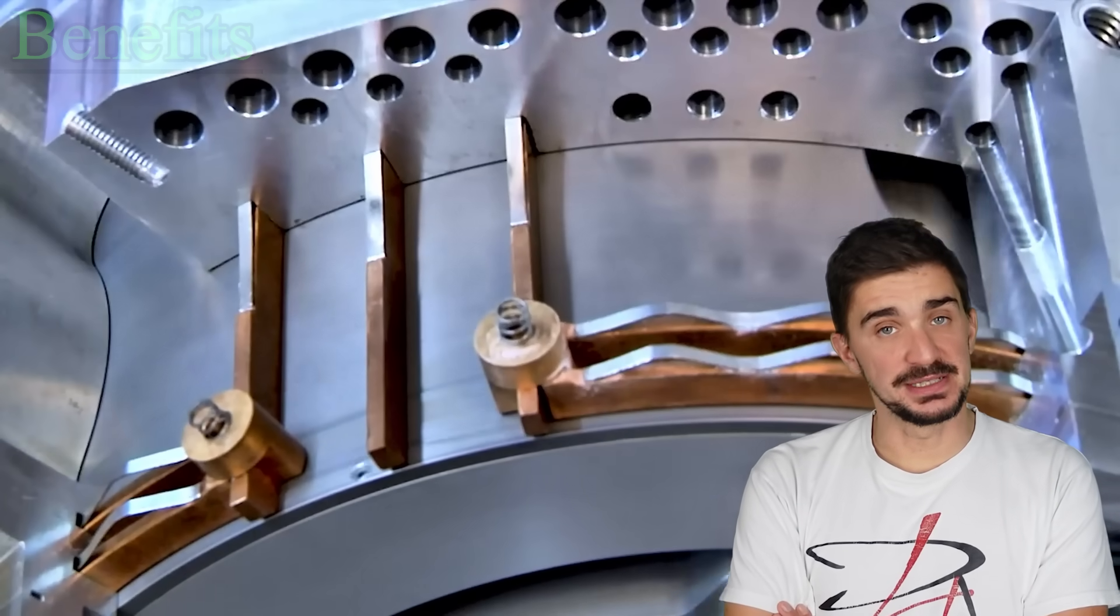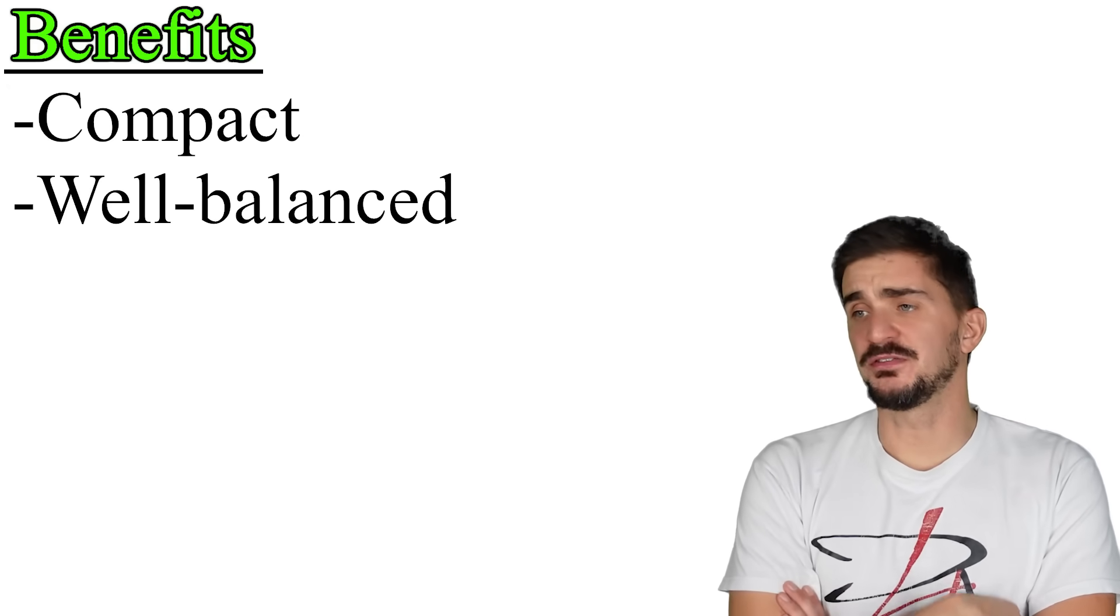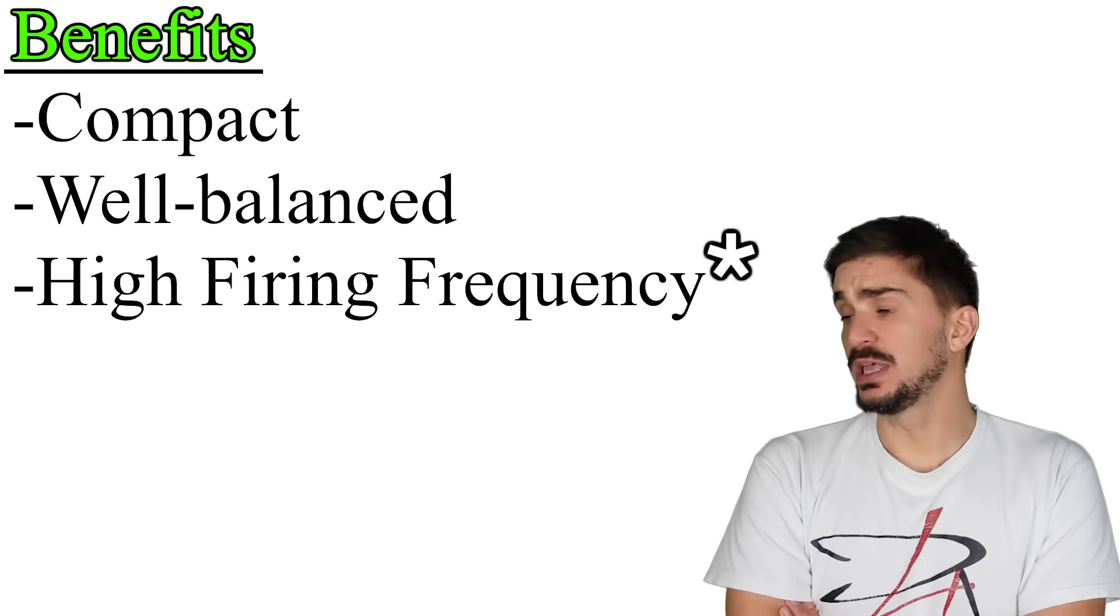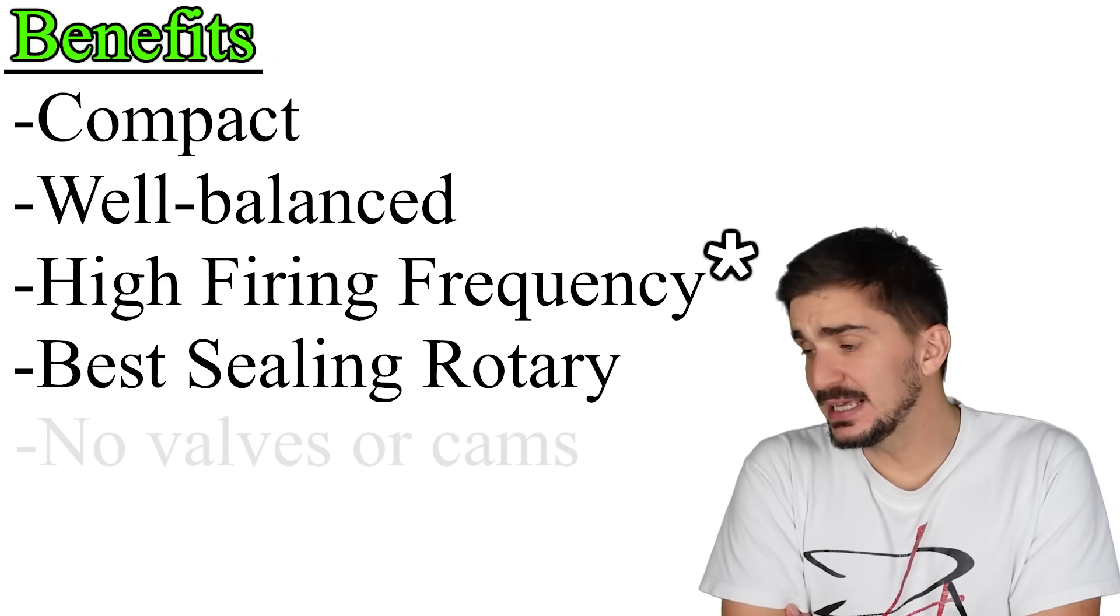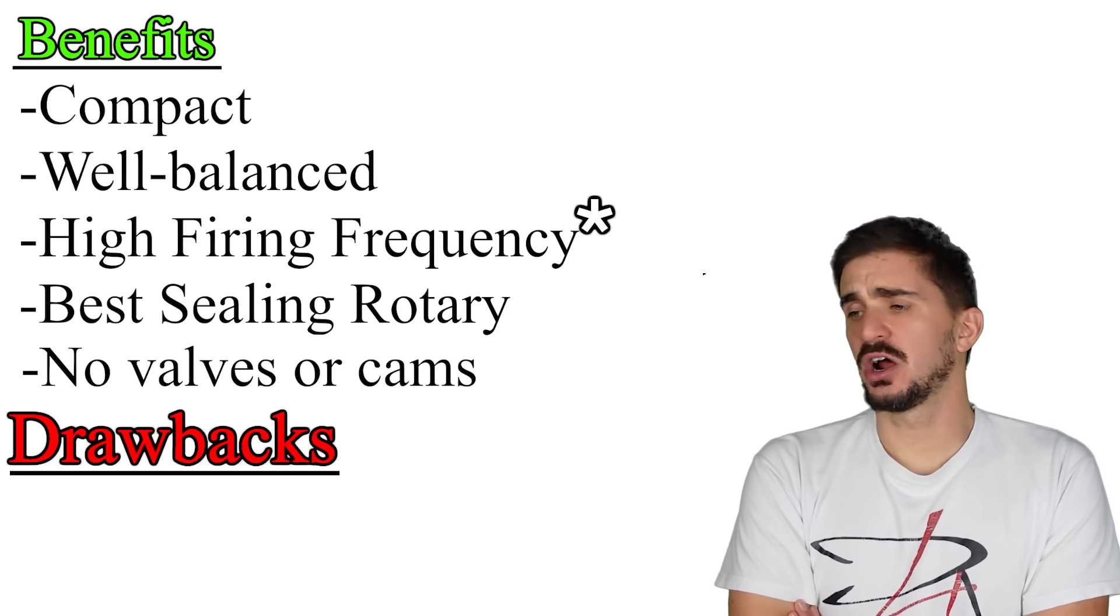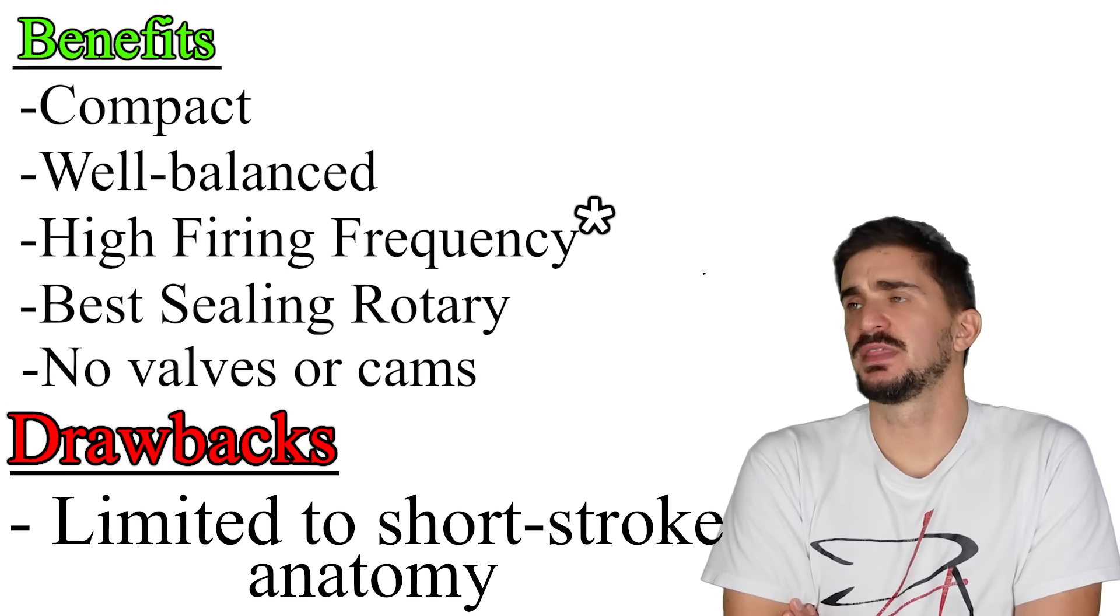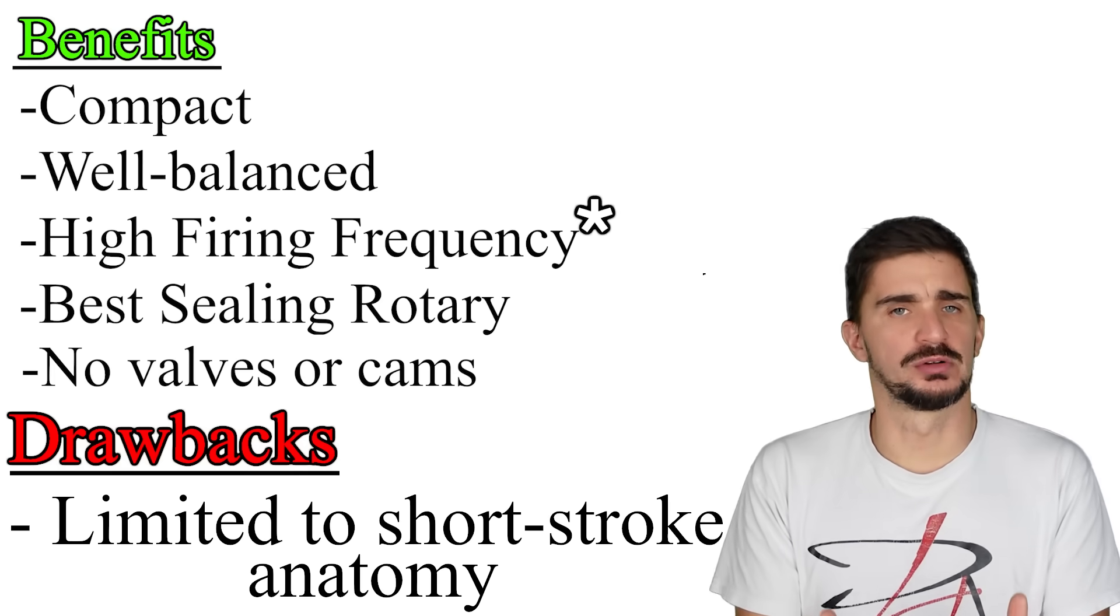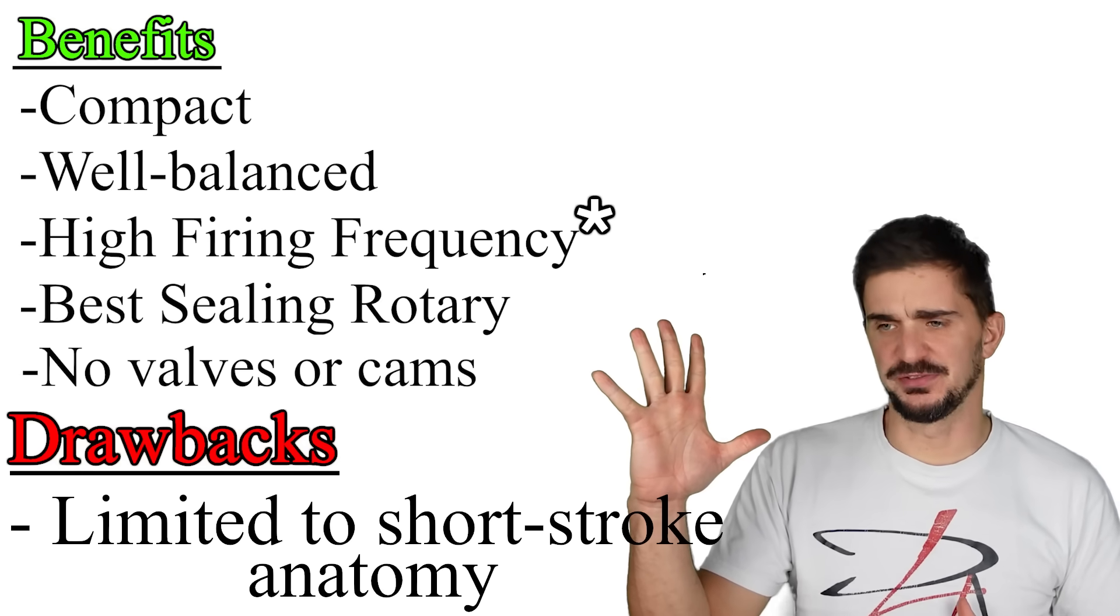Now, let us sum up the benefits and drawbacks. We have a very compact engine. It's well balanced. It fires more often than a conventional engine with the same number of pistons. We have the best sealing of all the rotaries. And we do all of this without needing valves or cams. Our only real drawback seems to be that we are limited to short stroke designs. I don't know about you, but to me, this seems like it genuinely manages to combine the best of both worlds. The perfect child of a rotary mother and a piston father.